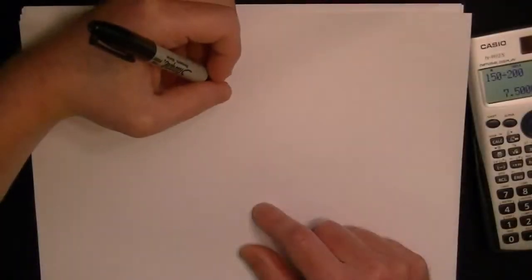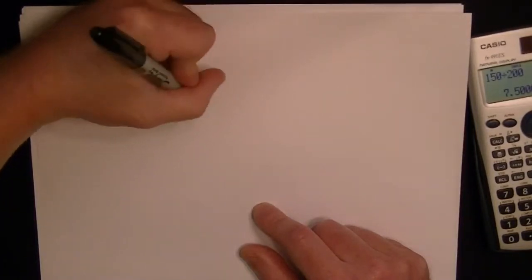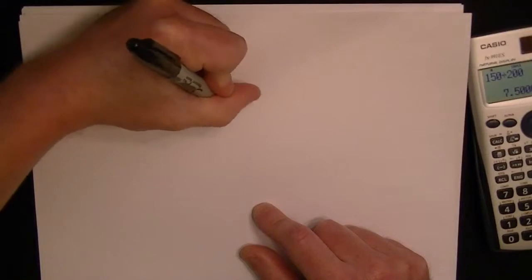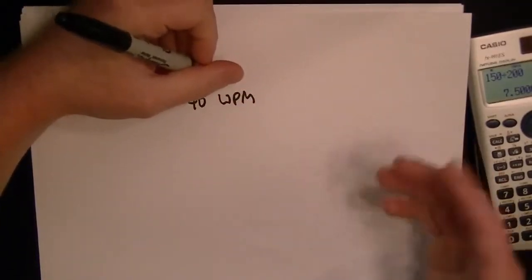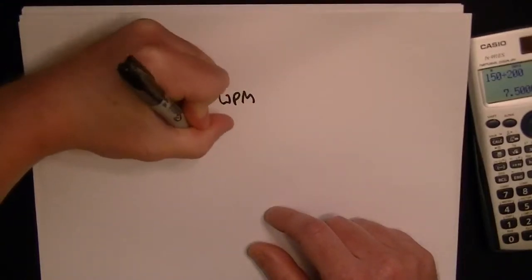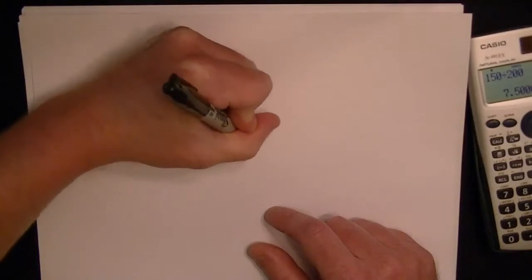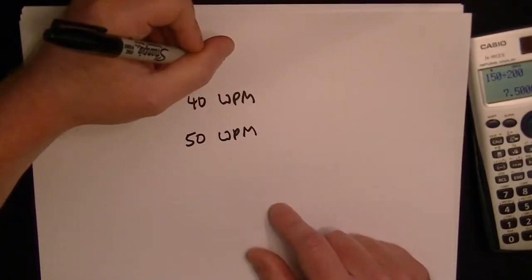Okay, this problem has to do with percentages. We're told a fellow is a typist and he can type 40 words per minute, so WPM, basically how fast he types. And then after a month, his speed increased to 50 words per minute. So they want to know by what percent did his speed increase.